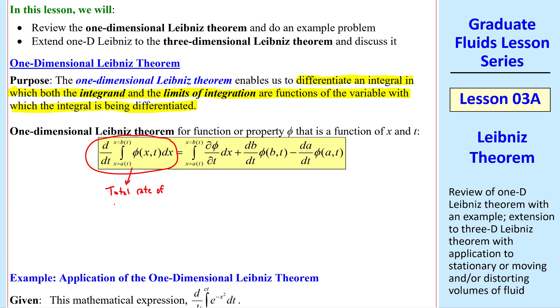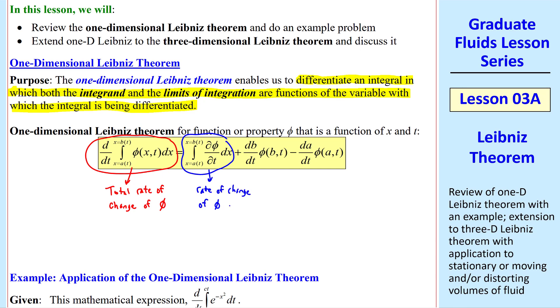I'll define each of these terms. The first one is the total rate of change of this volume integral of phi. This term represents the rate of change of phi due to unsteadiness, and that unsteadiness is the unsteadiness of phi itself, not the limits of integration. These two terms represent the rate of change of phi due to unsteadiness of the limits of integration, or you can think of a and b as the boundaries. We have all these terms because the limits or the boundaries are changing with time, and that is taken into account here.